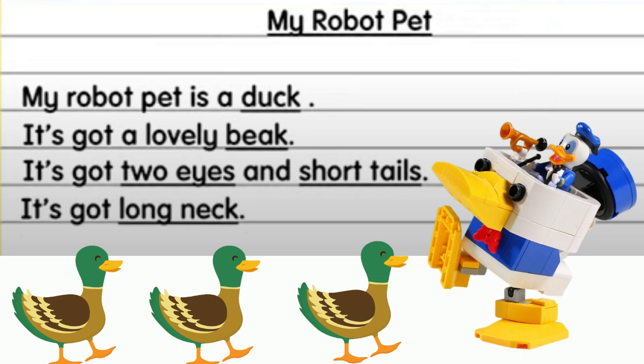Also, the real ducks. Example sentences: My robot pet is a duck. It's got a lovely beak. It's got two eyes — as you can see here, two black eyes and short tails. It's got a long neck.